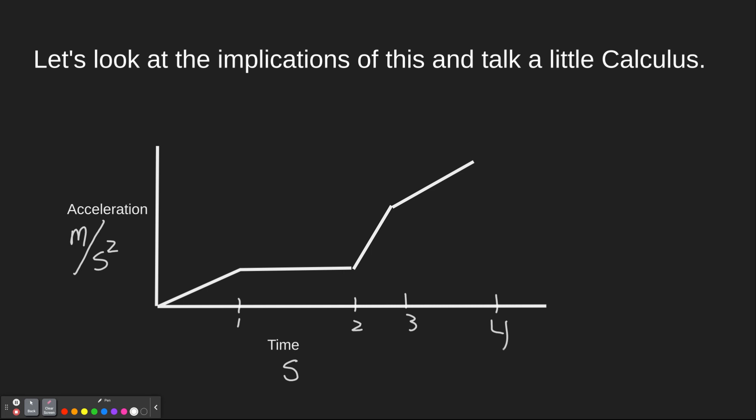You can see where our acceleration is changing at different rates throughout this period of time. So let's say this is one comma 0.5 here, and then that makes this two comma 0.5 there. And then let's say this is three comma three—it jumped big—and then maybe it finishes at four comma four.